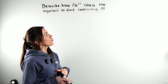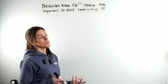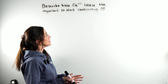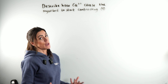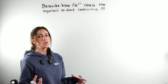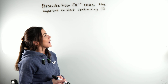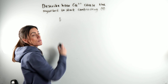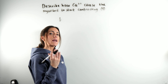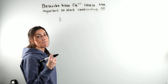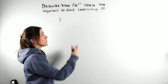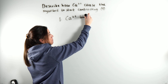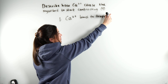Let's look at this A-level question which is all about muscles. We're being asked to describe specifically how calcium ions cause the myofibrils — the functional units of the muscle — to start contracting. First marking point: specifically what the calcium ions do is they bind to troponin.